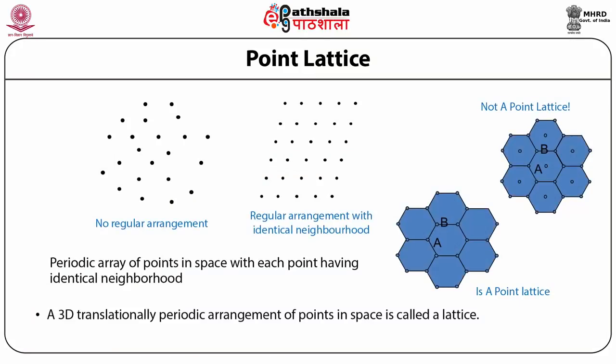So before moving further we will first discuss about basic crystallography. The first topic is point lattice. In a point lattice there is a periodic arrangement of points in space and each point must have identical neighbors. In other words, a point lattice is a regularly spaced array of points and each point must have identical neighborhood.